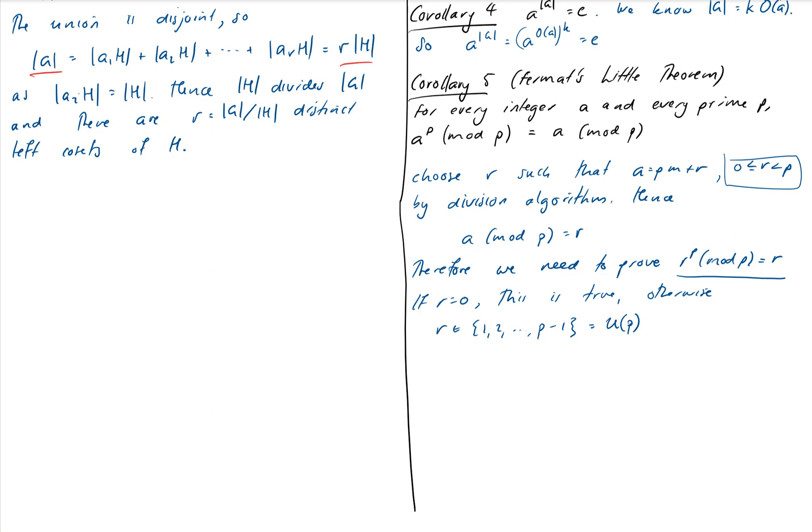We have to relate this to group theory somehow. We're on the, maybe we're on the right track. We know that the order of this group U of P is equal to P minus 1. So by corollary 4, an element to the order of the group, so R to the P minus 1 mod P must be equal to the identity which is 1. And we can therefore multiply by R on both sides which gives us R to the P mod P equals R as required.